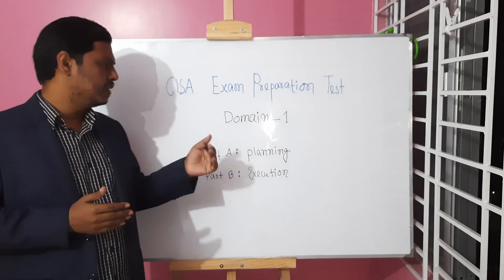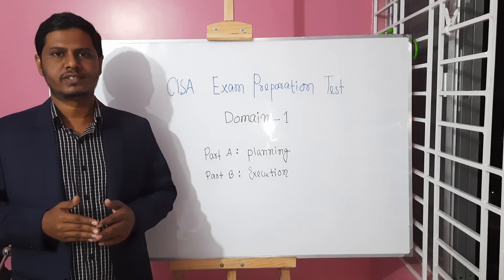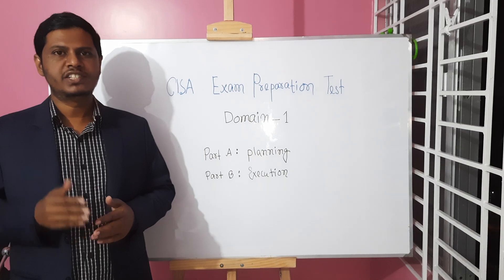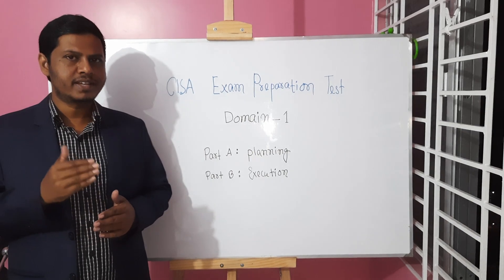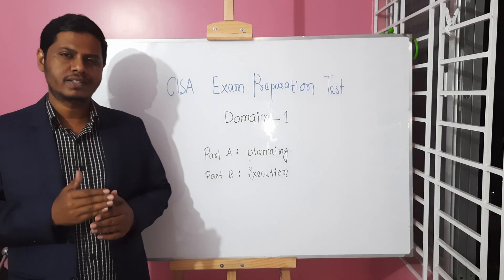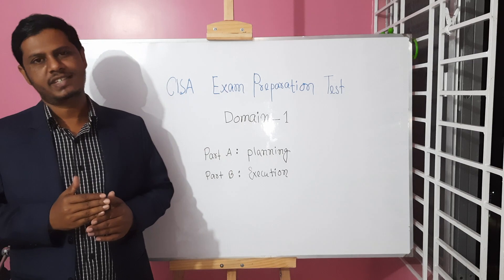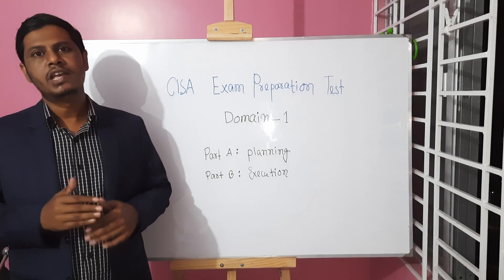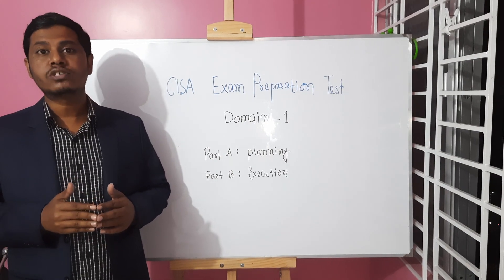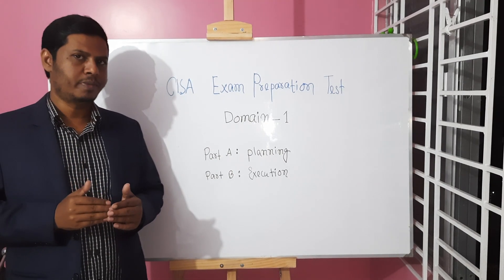Domain 1: Information Systems Auditing Process. This domain represents 21% of the content in the CISA exam, meaning you will get approximately 32% of questions from this domain.